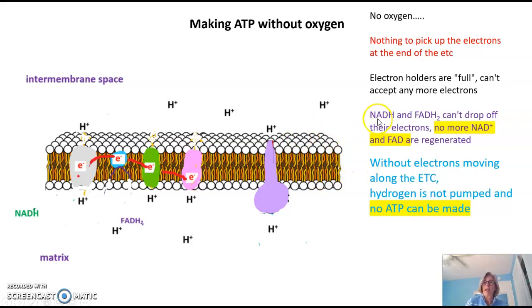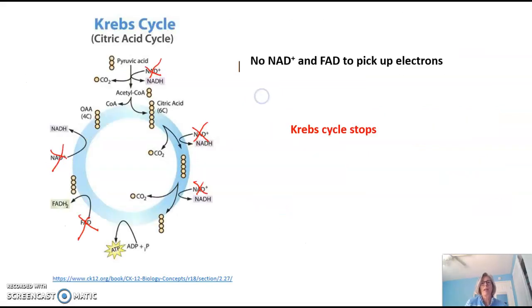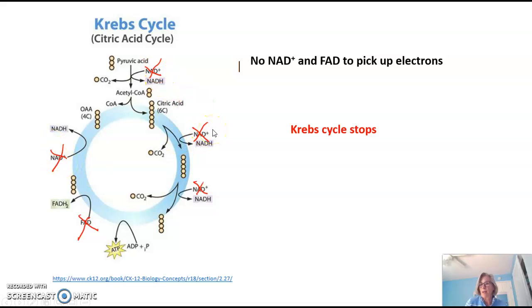If NADH and FADH2 cannot drop off their electrons at the electron transport chain, there will be no more NAD+ and FAD regenerated. So in addition to the electron transport chain stopping, what happens to the Krebs cycle? The Krebs cycle requires NAD+ and FAD for several reactions to occur — these reactions require NAD+ to pick up electrons and form NADH. Without these electron acceptors, and with no oxygen to pick up electrons at the end of the ETC, the Krebs cycle is going to stop.